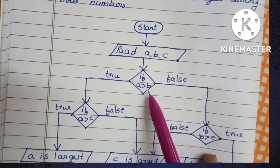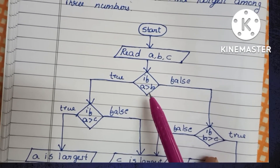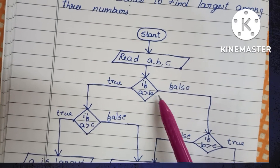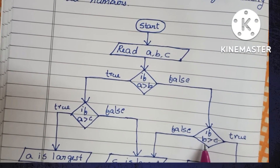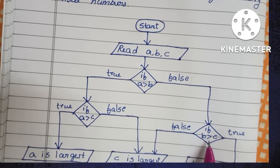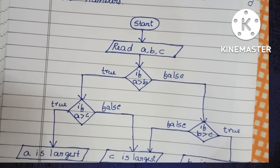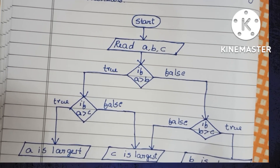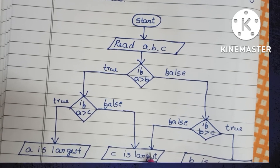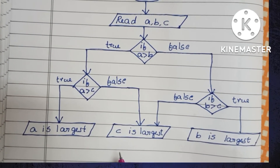If A greater than B is false, it means B is greater. That time we have to compare B with C. If B greater than C and this condition is true, it will print B is largest. If this condition is false, it will print C is largest.